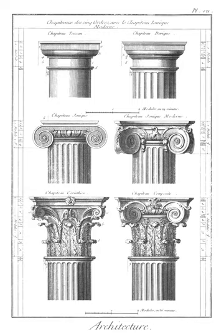Distyle in Antis: an architectural term for a portico having two columns between two antae.